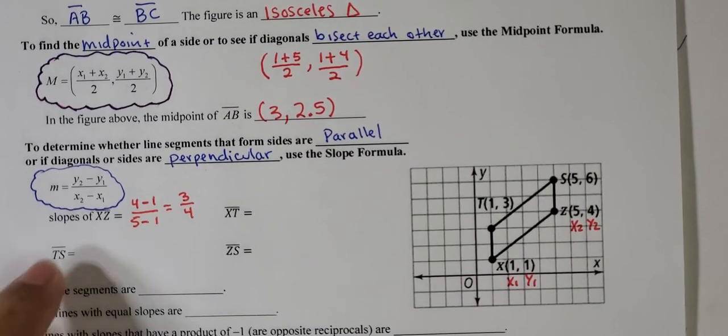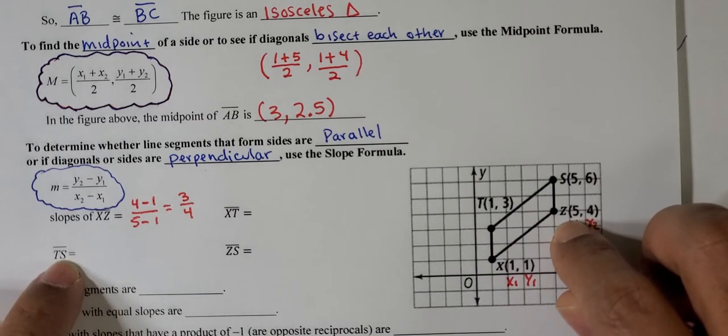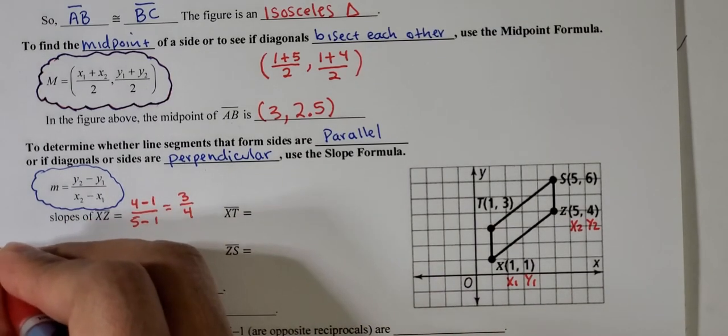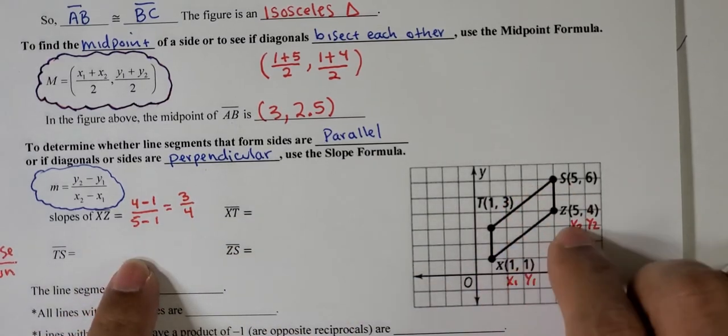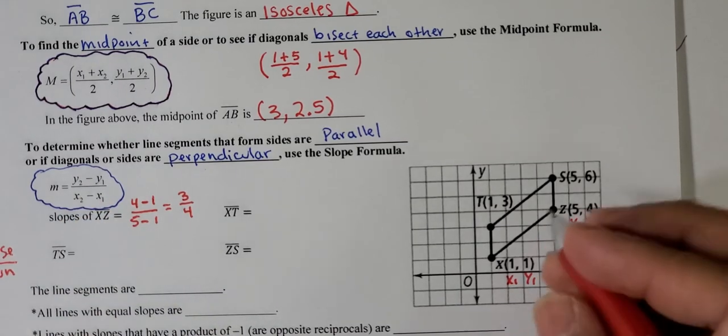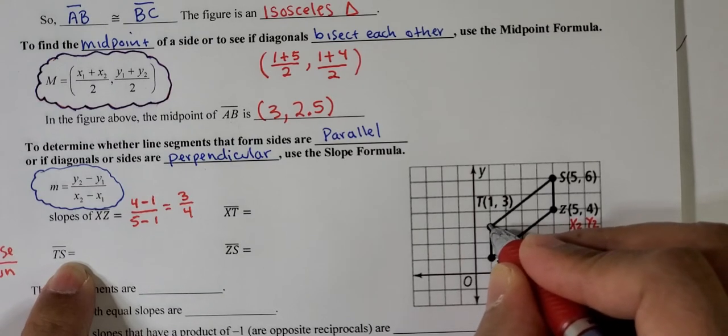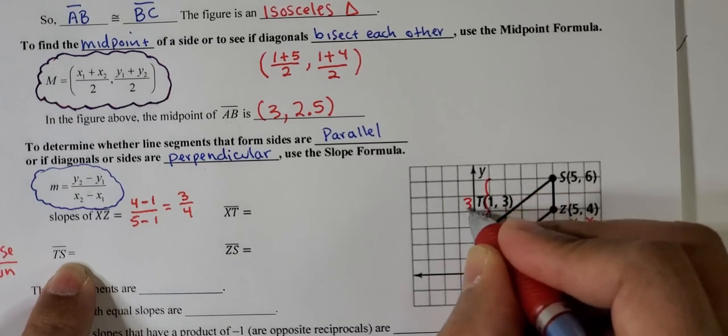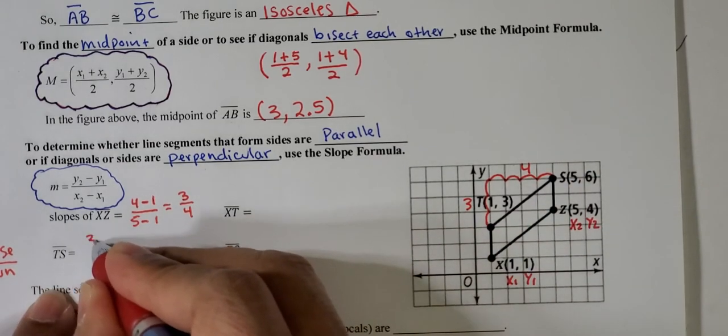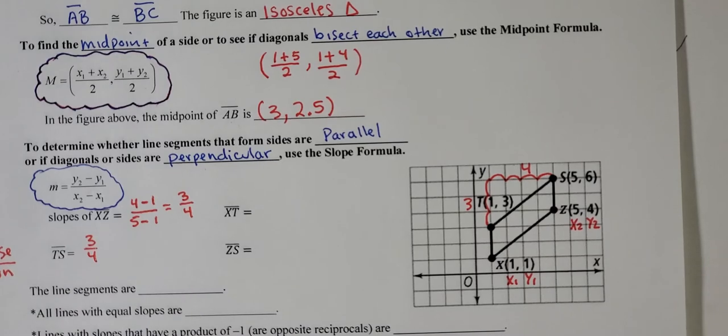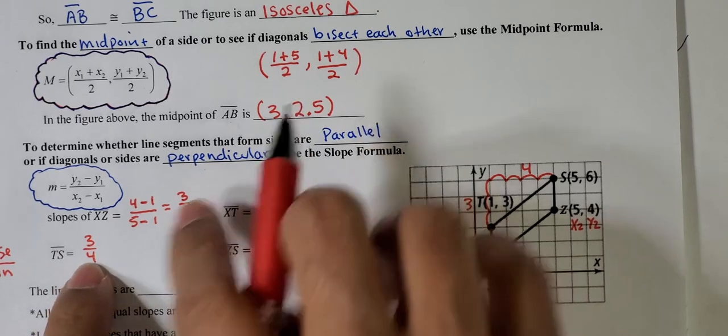Let's now find the slope of TS, and I'm going to remind you that there's another way, if you have a graph, that you can actually find the slope. You can always use rise over run. If you're given a graph, you can use rise over run. If you're given coordinates, then you can use the slope formula. So the slope of TS, this one has a rise of 1, 2, 3, so it has a rise of 3, and a run of 1, 2, 3, 4, so this has a run of 4. So this is 3 fourths. So far we can see that these two have the same slope, so I hope you're making the connection about the relationship between these two sides.